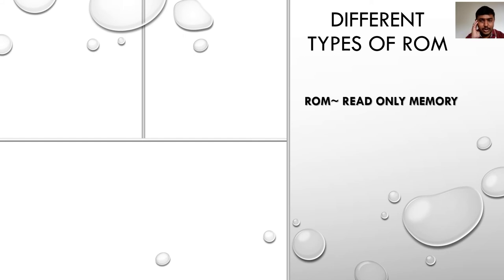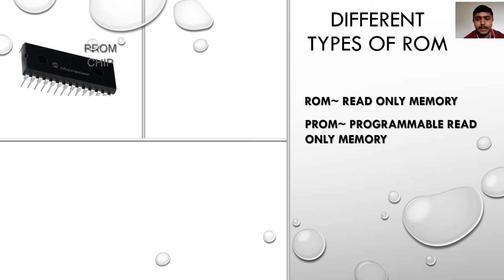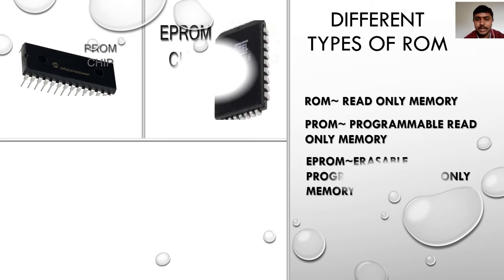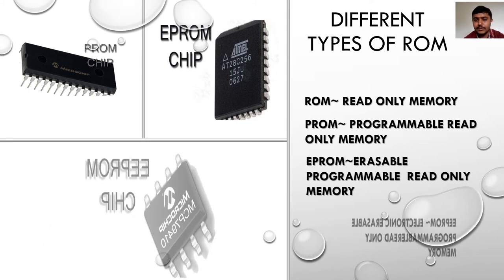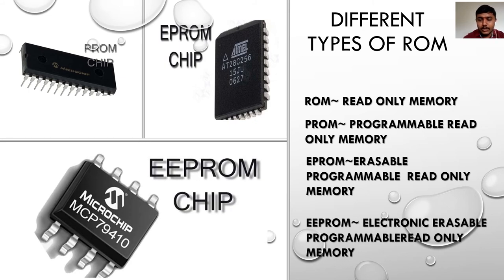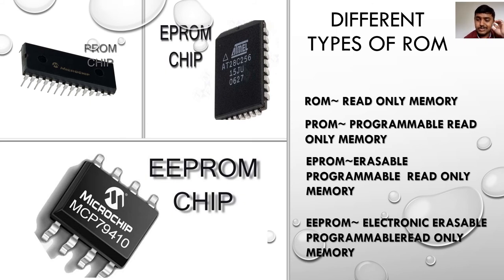There are different types of ROMs: ROM (Read Only Memory), PROM (Programmable Read Only Memory), EPROM (Erasable Programmable Read Only Memory), and EEPROM (Electronically Erasable Programmable Read Only Memory). ROM is used to store data permanently. The information is burned into the ROM at manufacture time itself.